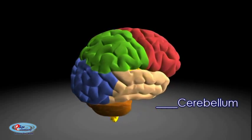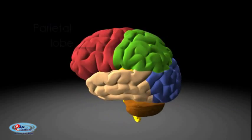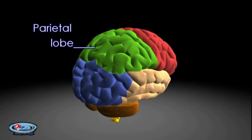The parietal lobe is a part of the brain positioned above the occipital lobe and behind the frontal lobe. The parietal lobe integrates sensory information from different modalities, particularly determining spatial sense and navigation.